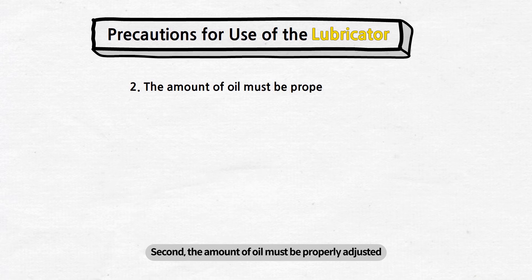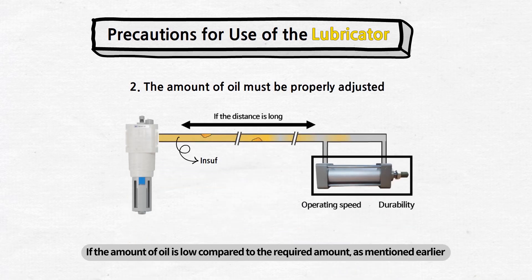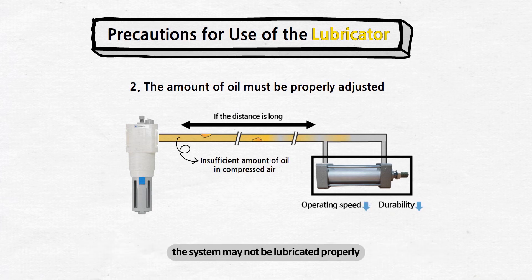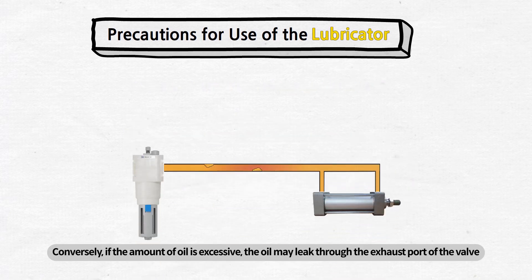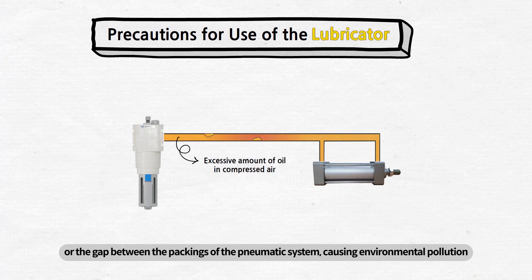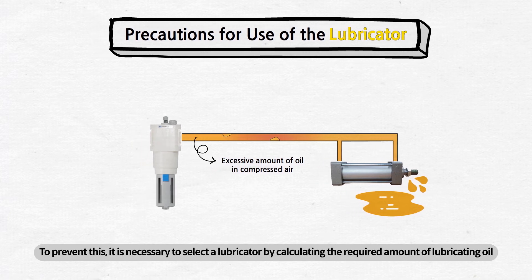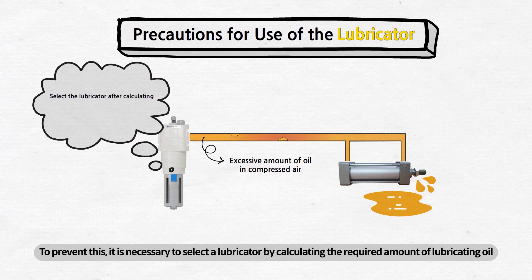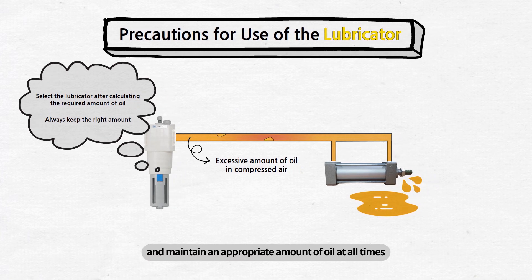Second, the amount of oil must be properly adjusted. If the amount of oil is low compared to the required amount, the system may not be lubricated properly. Conversely, if the amount of oil is excessive, the oil may leak through the exhaust port of the valve or the gap between the packings of the pneumatic system, causing environmental pollution. If the waste of oil continues, the cost loss could not be ignored. To prevent this, it is necessary to select a lubricator by calculating the required amount of lubricating oil and maintain an appropriate amount of oil at all times.